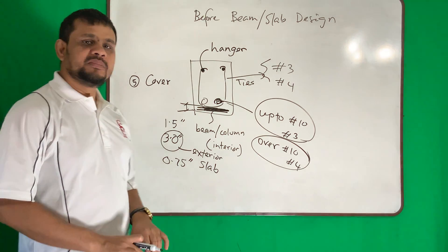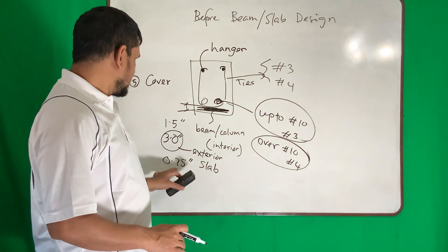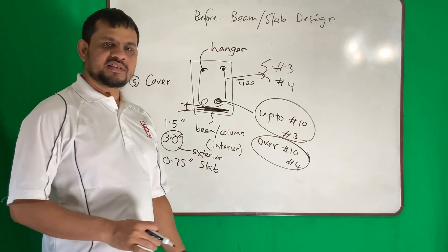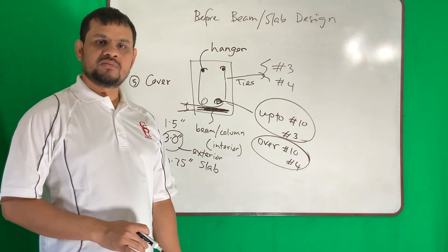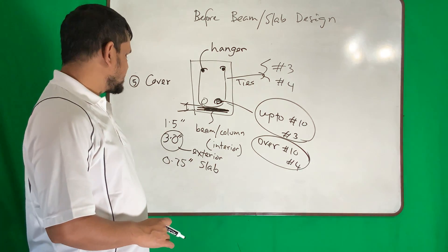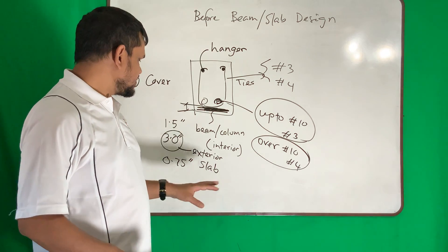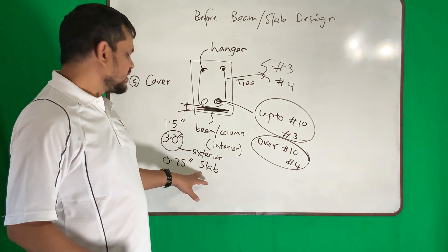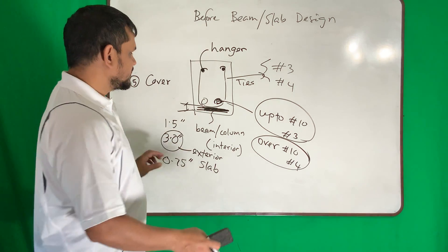For slabs, we use 0.75 inches of cover, and this mainly applies to interior slabs. If the slab has a chance of getting water — such as a roof slab — we should increase the cover value.